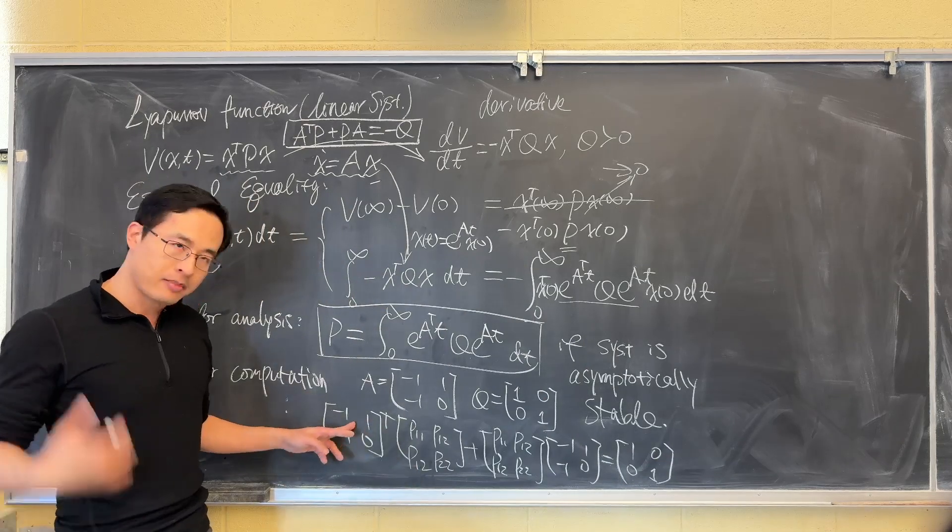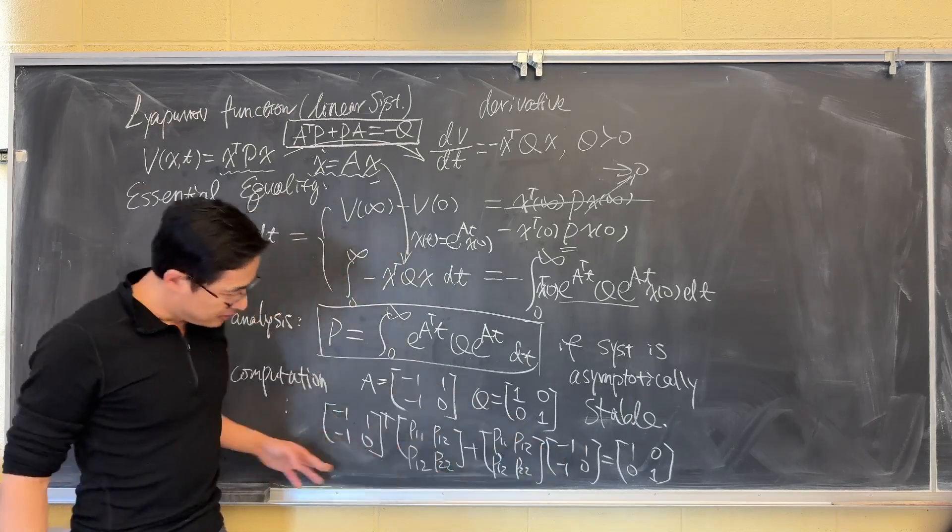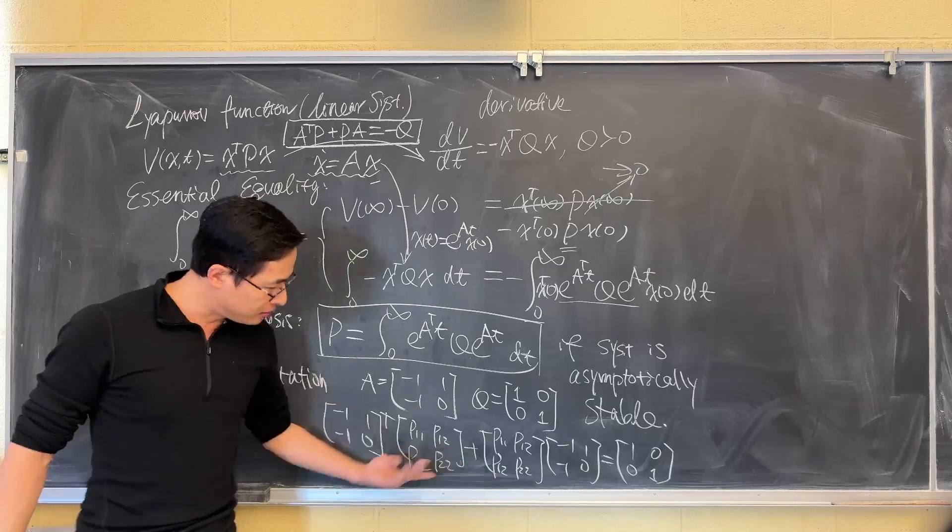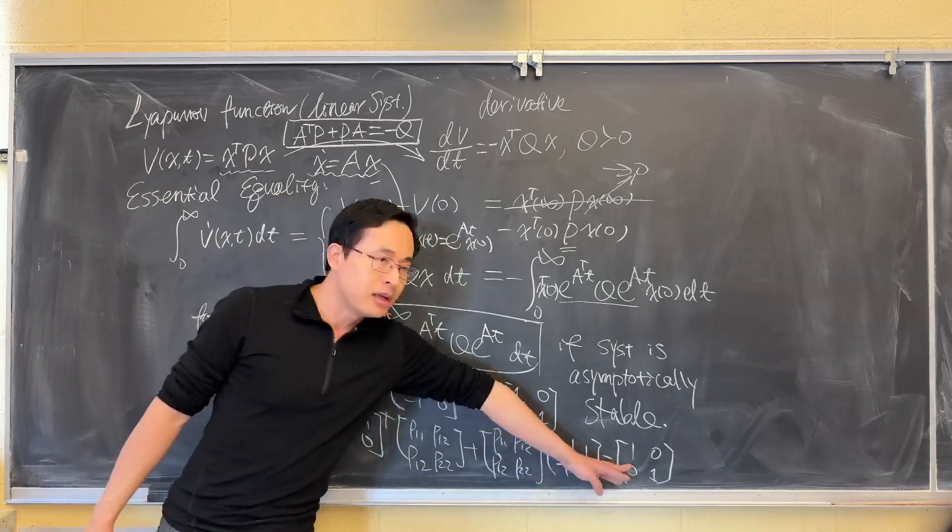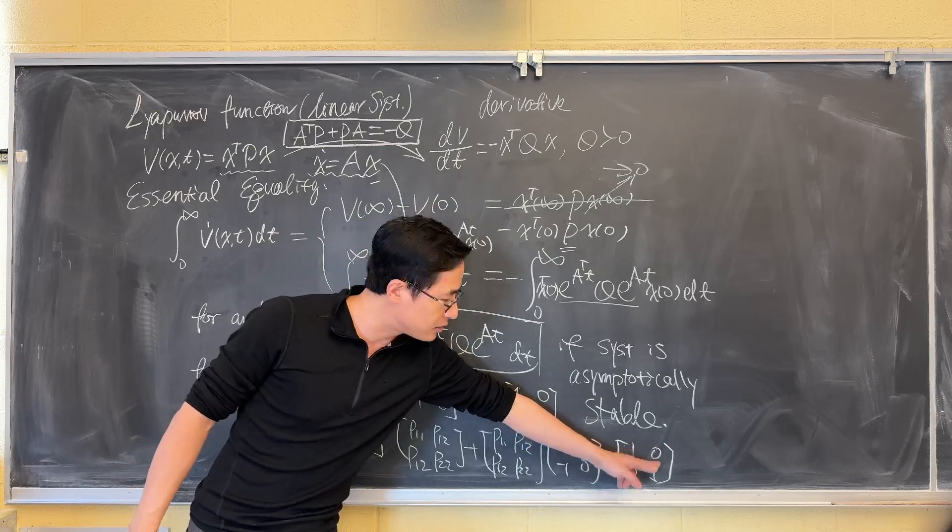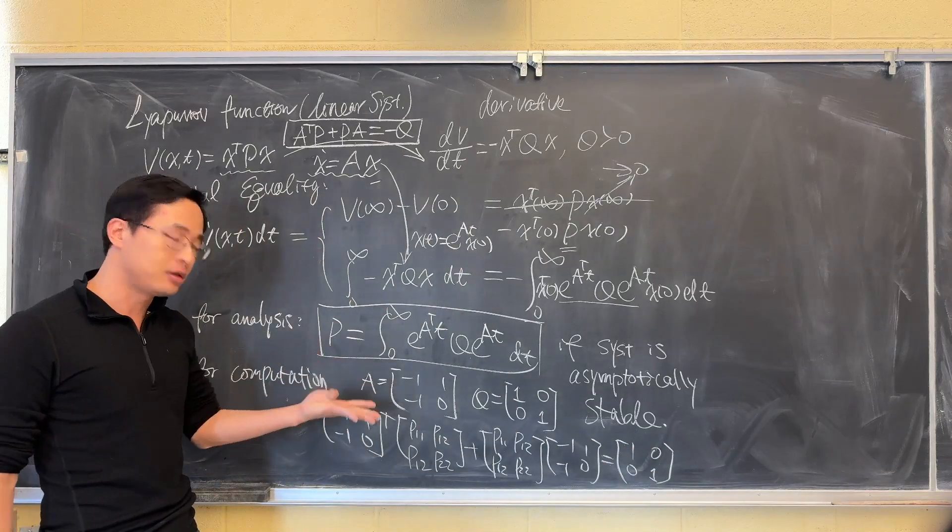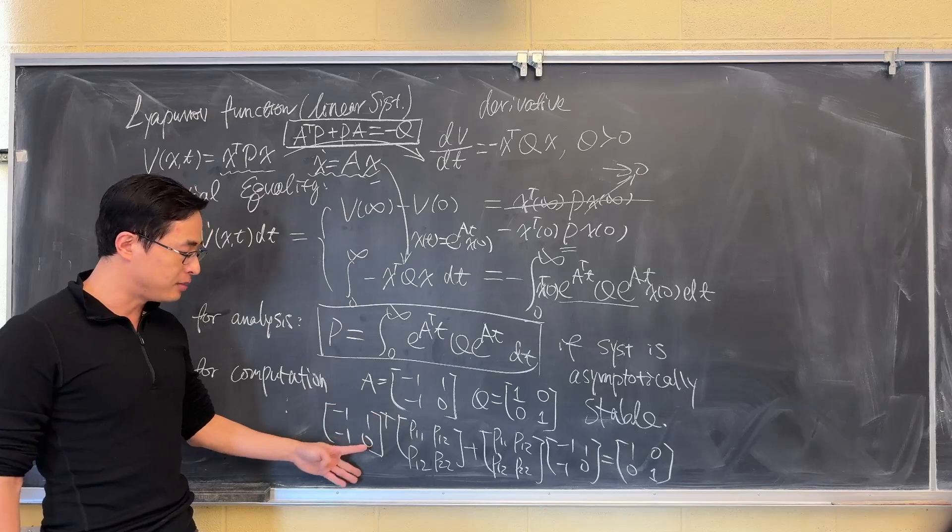This is a matrix equality, meaning that on the left, you have a 2 by 2 matrix after all these computations. And every entry on the left has to equal to the corresponding entries on the right-hand side. So you will have four equations out of this matrix equality.